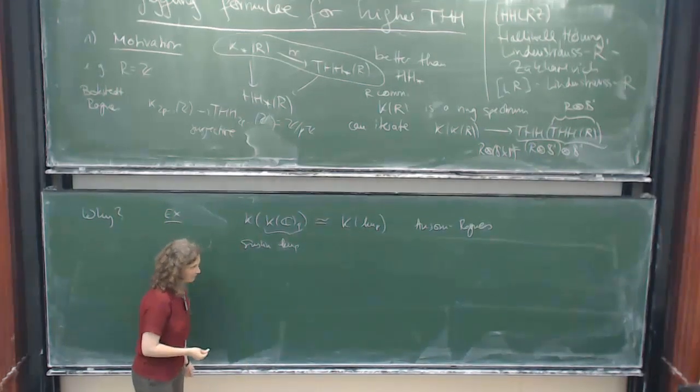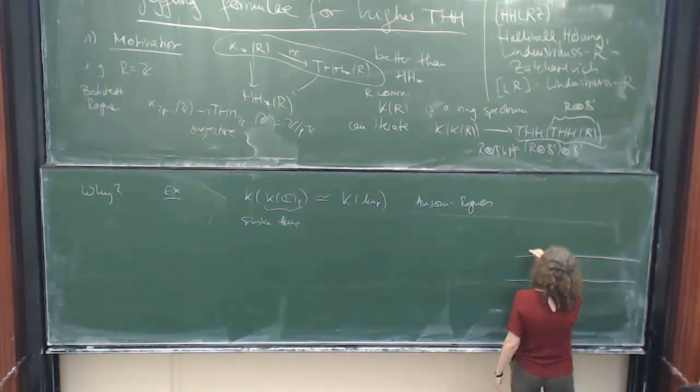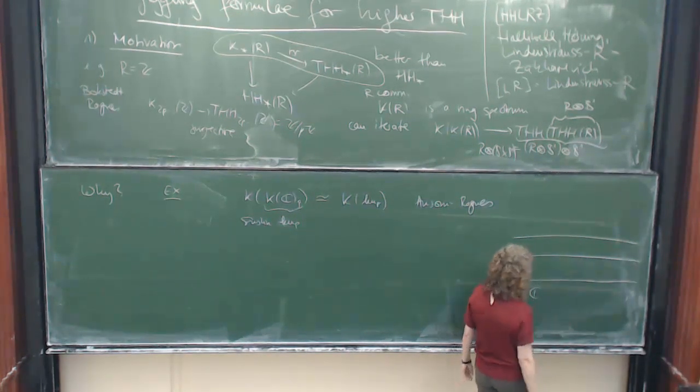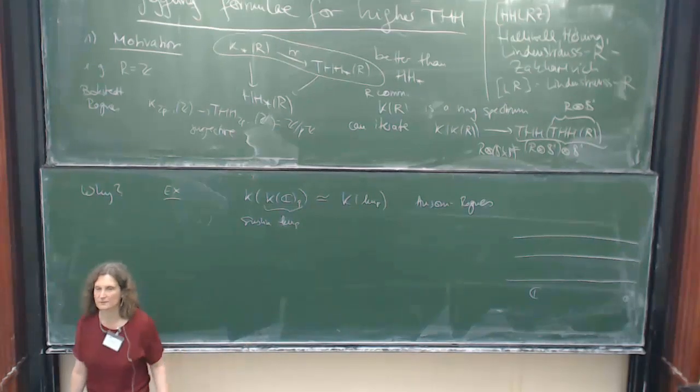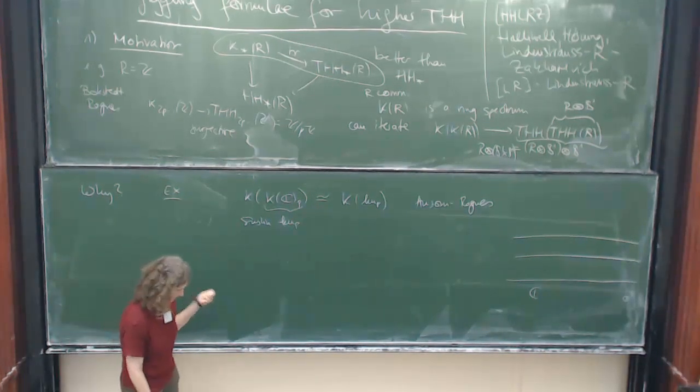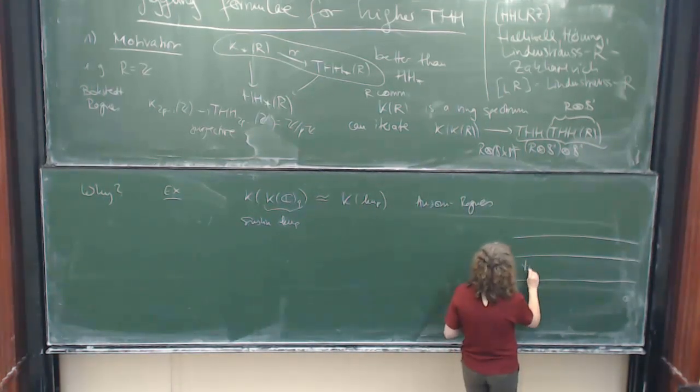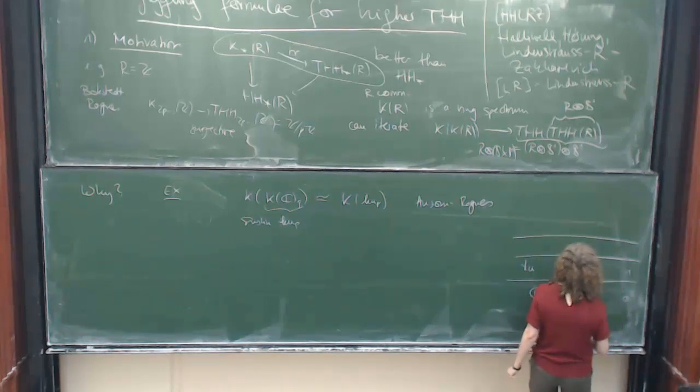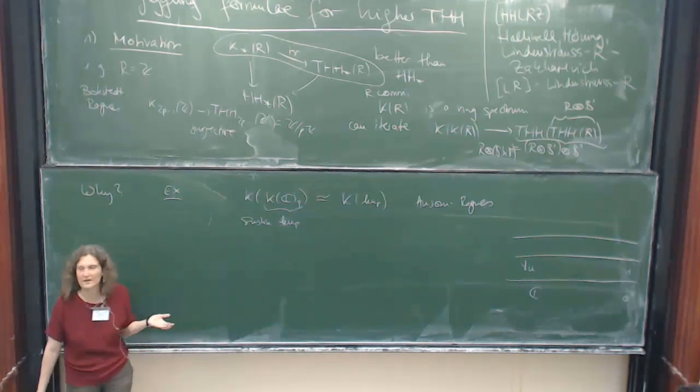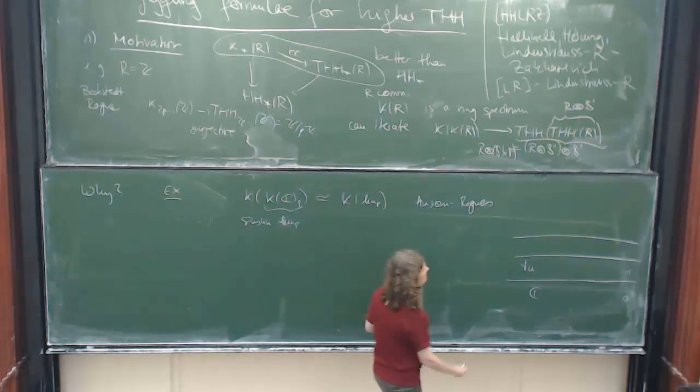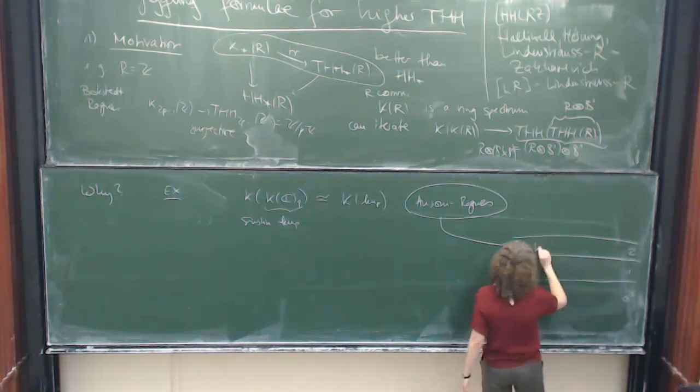And the important thing you see there is, sorry if this sounds discriminating, but things like the complex numbers live down here in chromatic level 0. If you take homology with complex coefficients, this tells you something, but it doesn't tell you a lot about stable homotopy theory. It's right at the bottom. K-u has chromatic filtration one, whatever this means, it sees a tiny bit more.